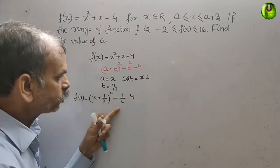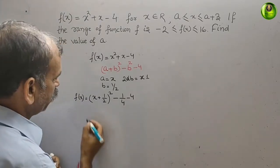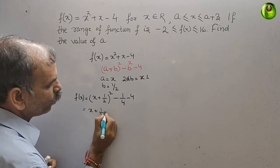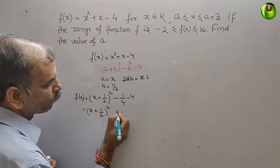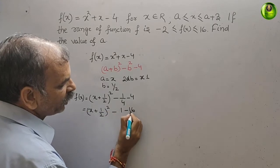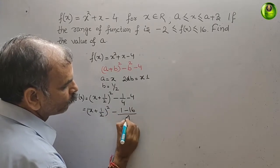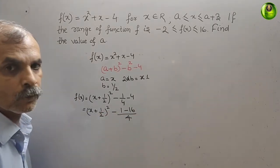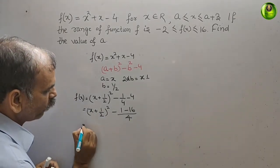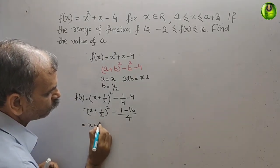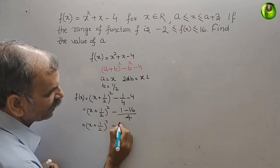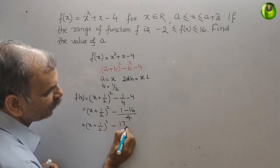Taking the LCM, we get f(x) = (x + 1/2)² - (1 + 16)/4 = (x + 1/2)² - 17/4.